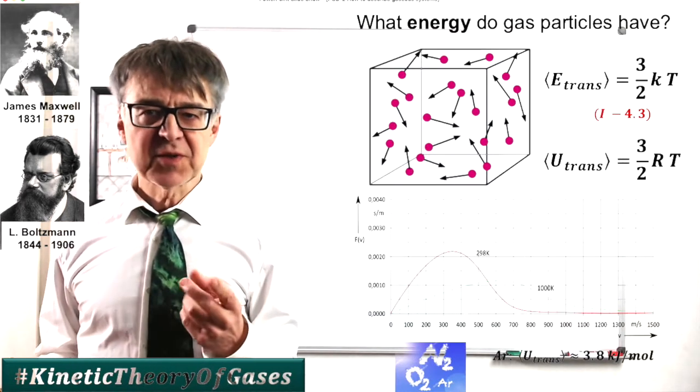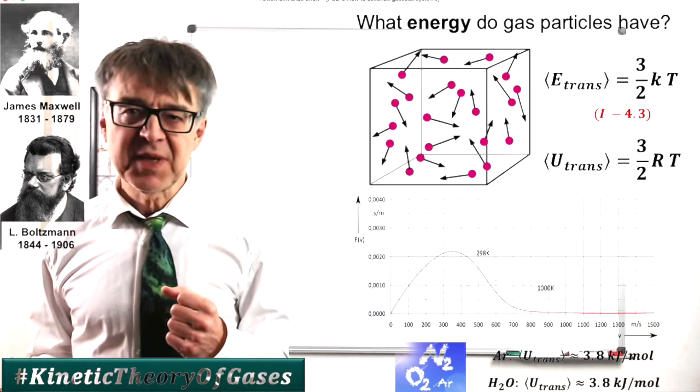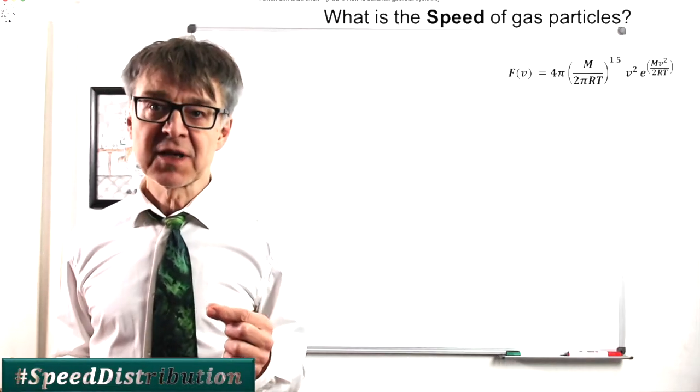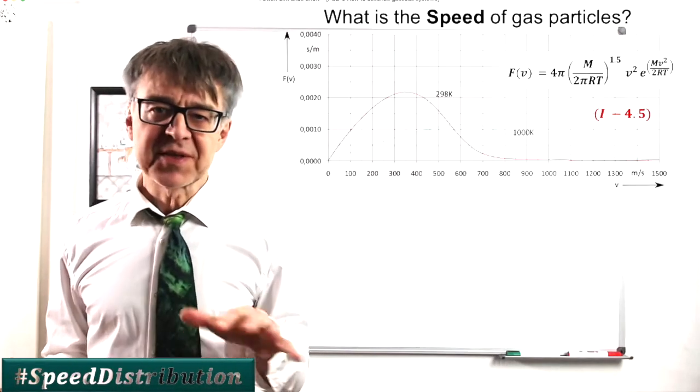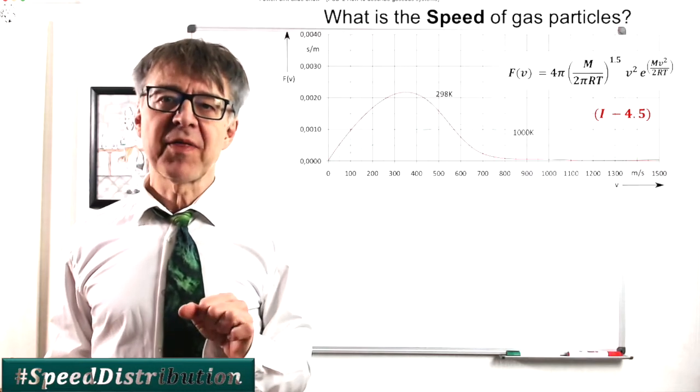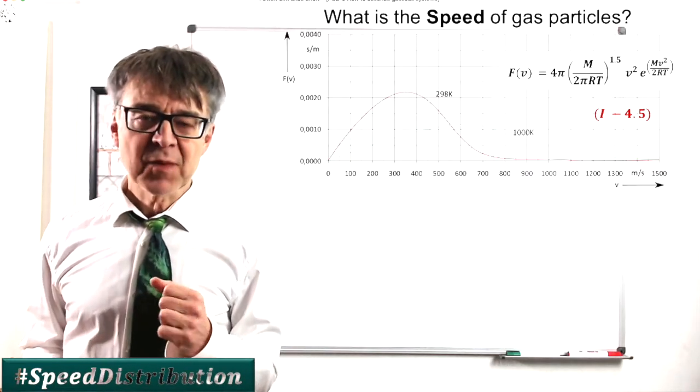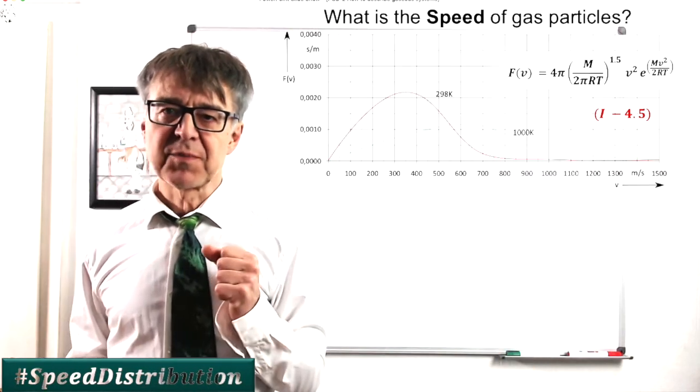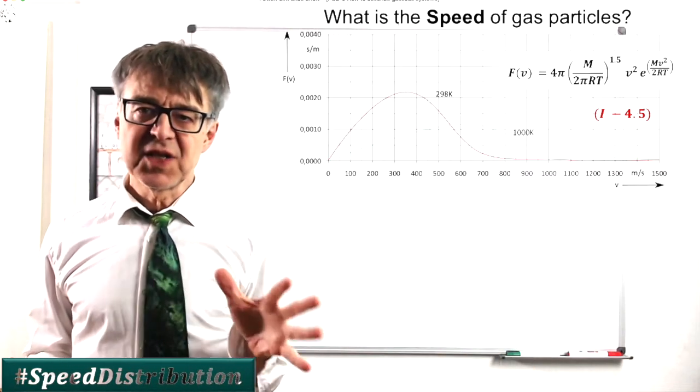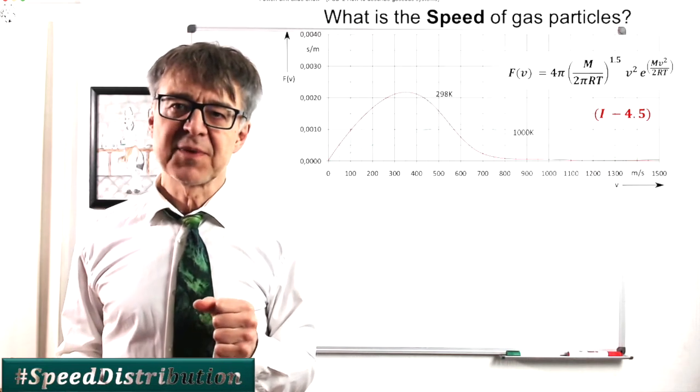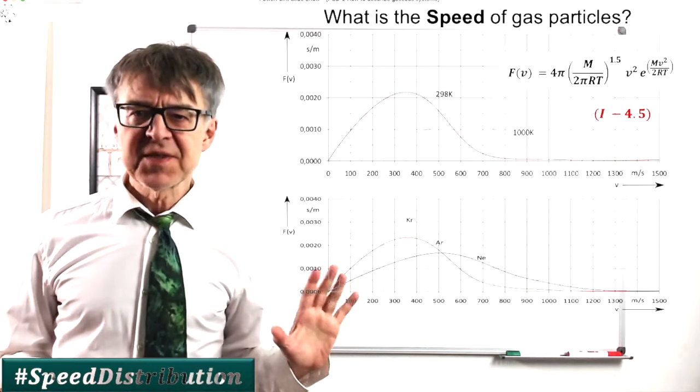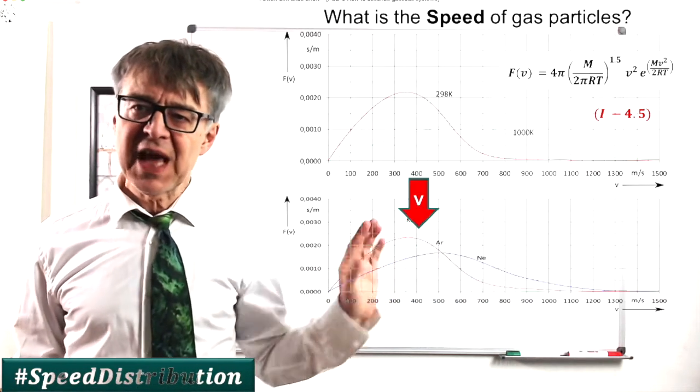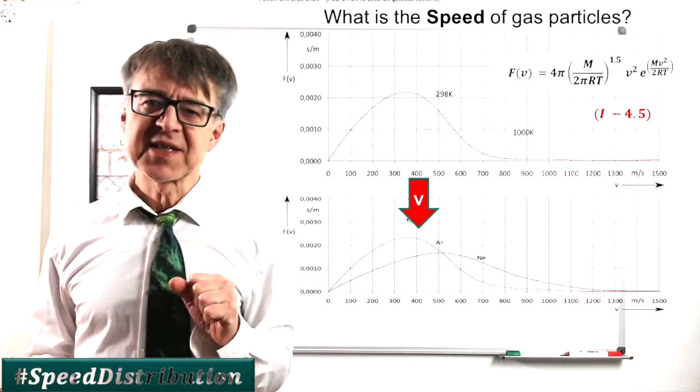Any gas at room temperature have the thermal energy of 3.8 kJ per mole. Maxwell and Boltzmann also set up an equation for the speed distribution in a gas. Well, you don't have to remember this equation, but the graph is worth that we take a closer look. On the x-axis, the speed of the gas molecules is plotted. It ranges from 0 to 1500 meters per second.